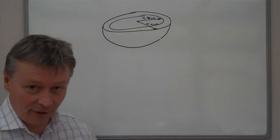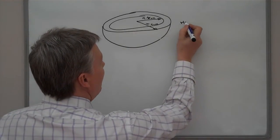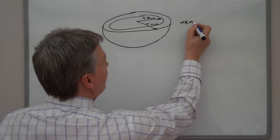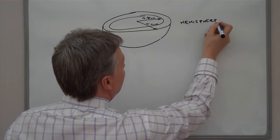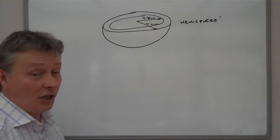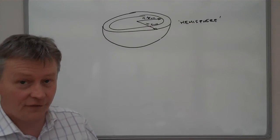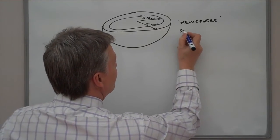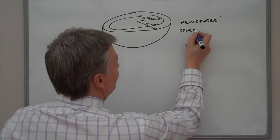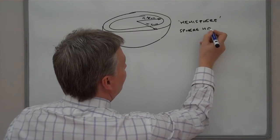So that's the information we're given. We're given that it's a hemisphere. So if I just write that up on the board, it's hemisphere. And a hemisphere is actually half of a sphere.